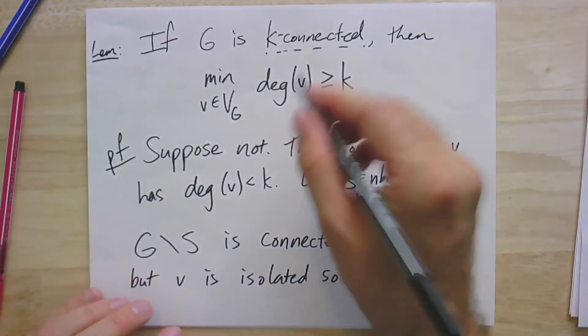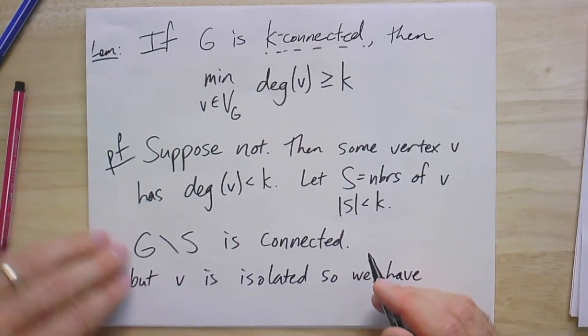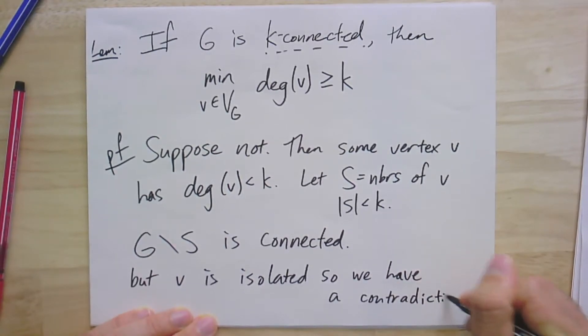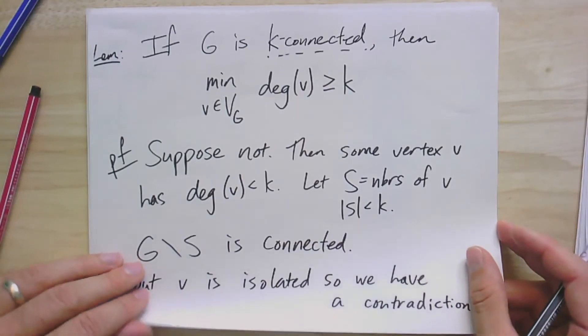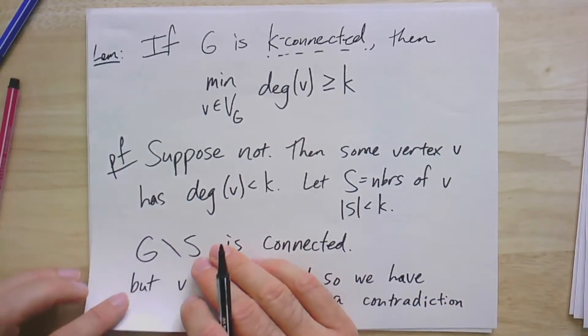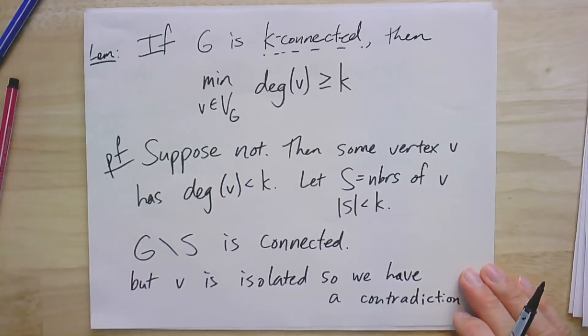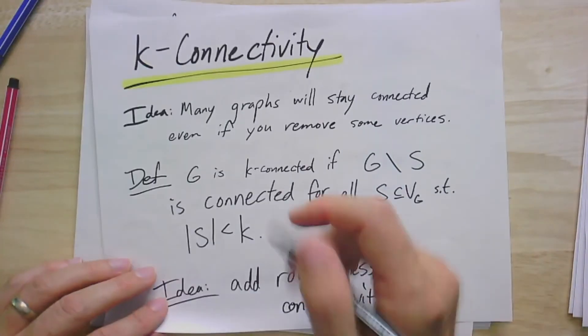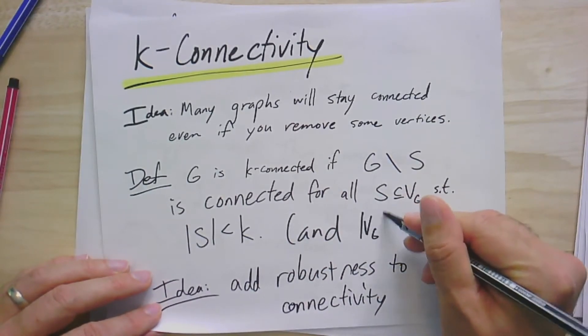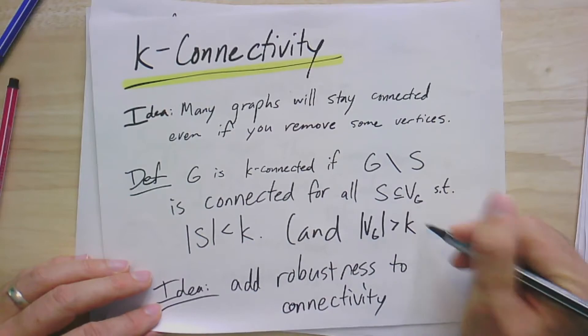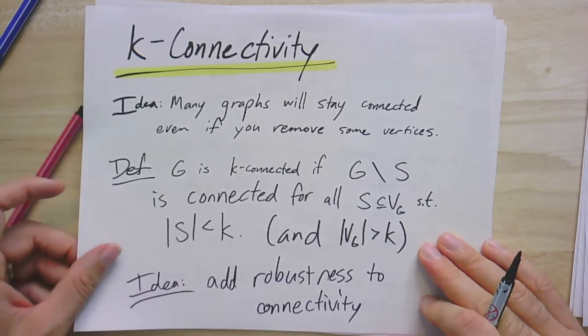There's another clause here in the definition of K connectivity that gets left out sometimes when we talk a little too quickly. And that is that you can imagine one case where this seems to go wrong, possibly, is that if S was somehow all the other vertices in the graph. And for this reason, we usually require for K connectivity that the number of vertices has to be at least K plus 1, or strictly greater than K. So, you need to have enough vertices to be K connected, and then the definition makes sense.